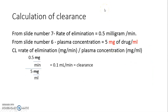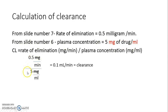With this we can easily calculate the clearance. The rate of elimination is 0.5 mg per minute, and the plasma concentration is 5 mg per ml. The clearance would be 0.5 mg per minute divided by 5 mg per ml. With cross multiplication, the mg cancels and ml moves up, giving an eventual result of 0.1 ml per minute, which is the clearance.